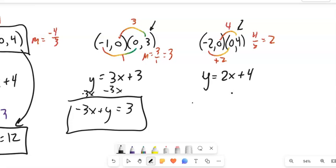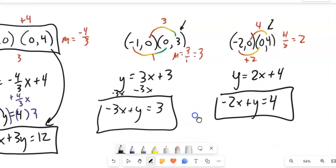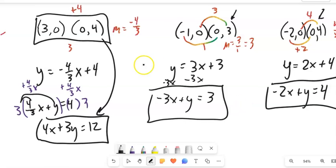And that's my y-intercept. So I've got y equals 2x plus 4. I can subtract 2x from both sides. Negative 2x plus y equals 4. Okay, interesting.